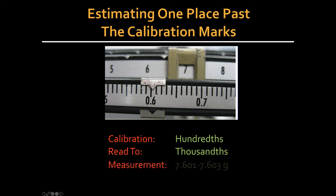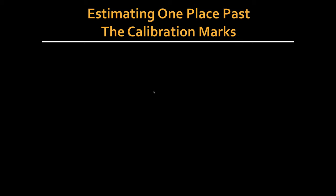Therefore, 7.601 to 7.603 would be acceptable. 7.609 would not be, nor would 7.605, which would put it directly in between the two lines. So you take the best possible guess.